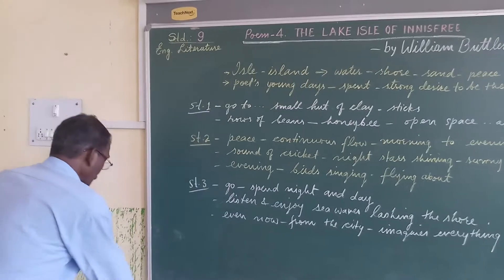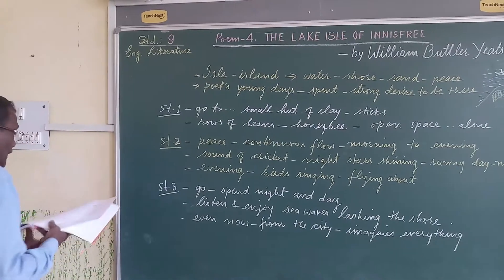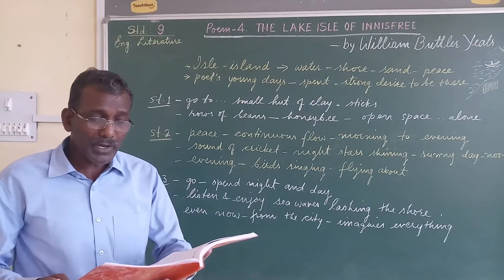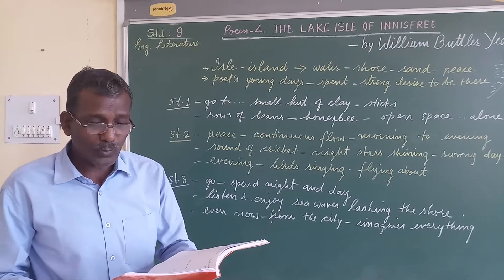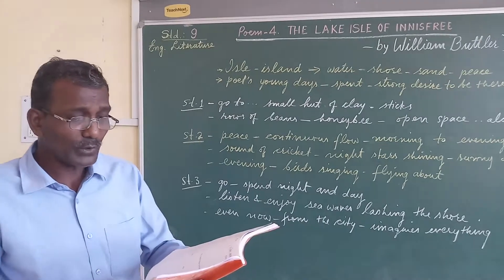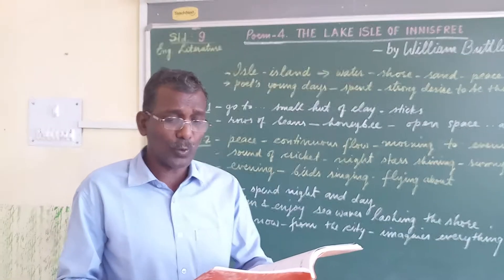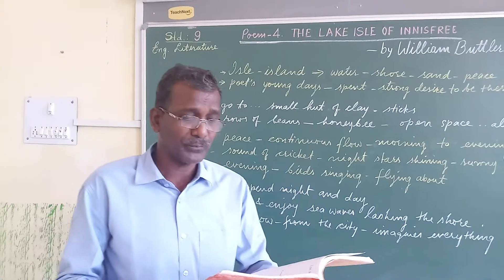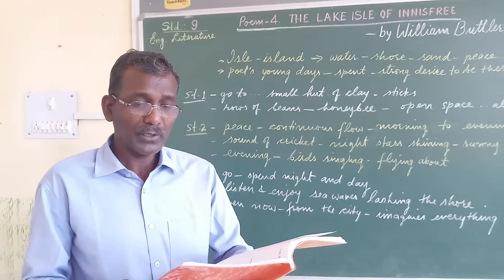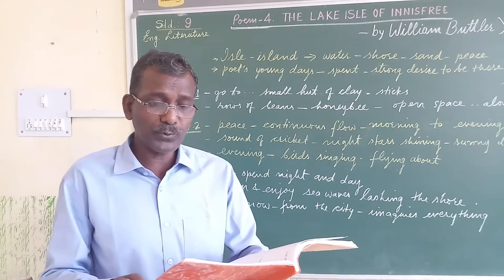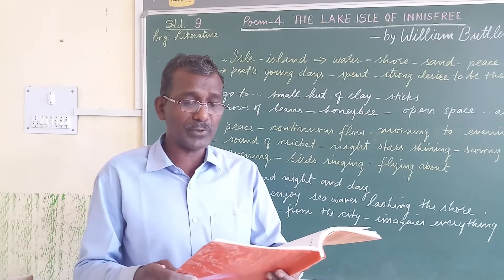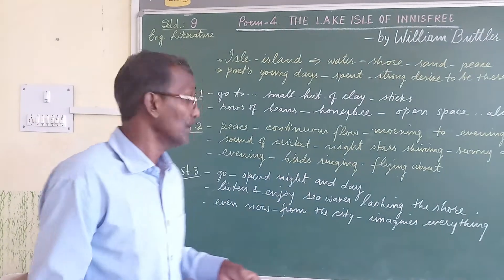Let us go line by line. The first stanza says: 'I will arise and go now, and go to Innisfree. I will a small cabin build there, of clay and wattles made. Nine bean-rows will I have there, a hive for the honeybee, and live alone in the bee-loud glade.'